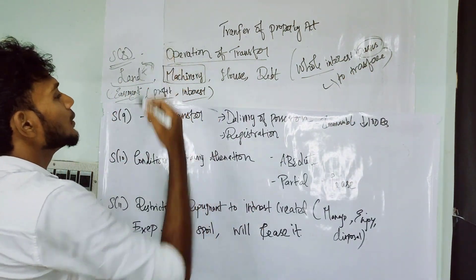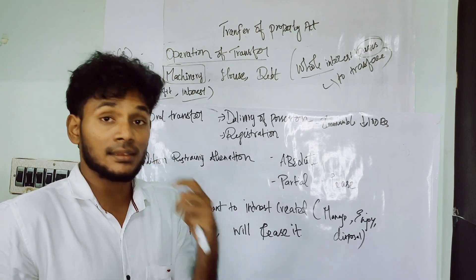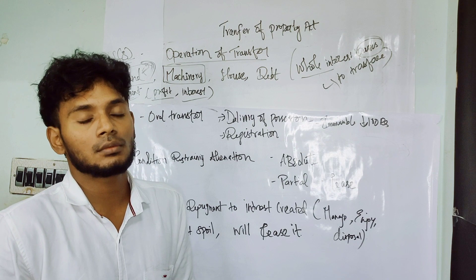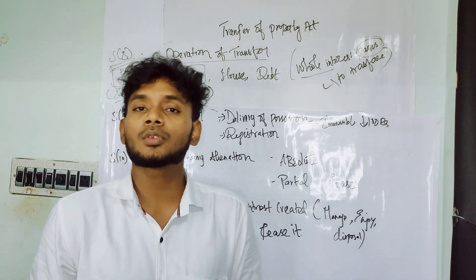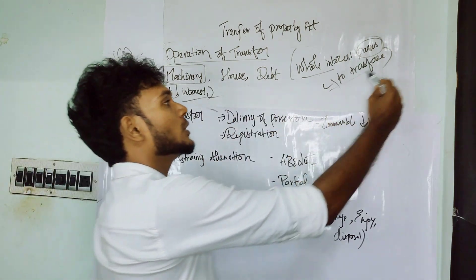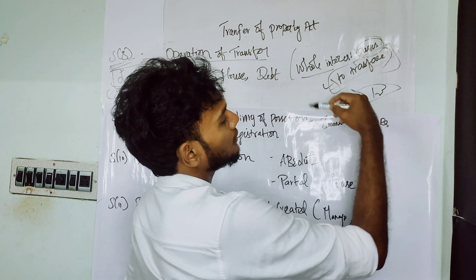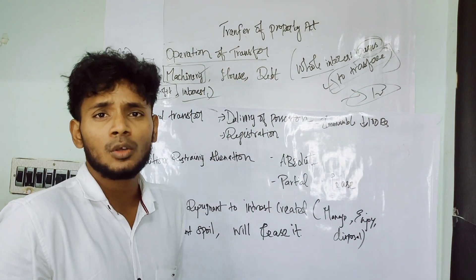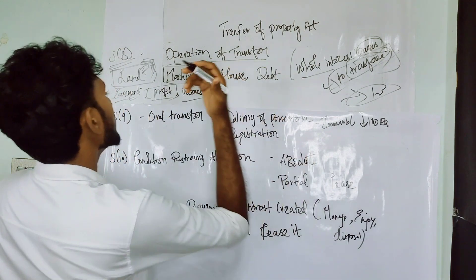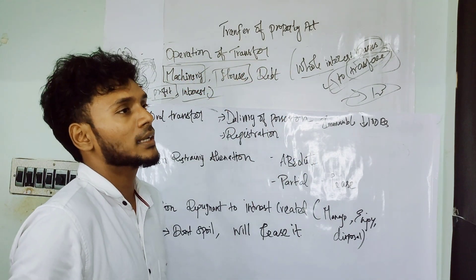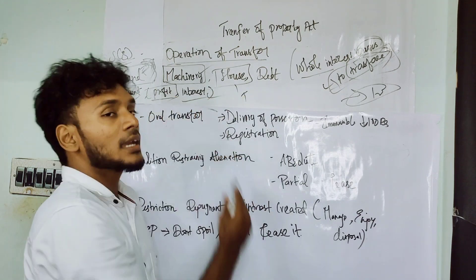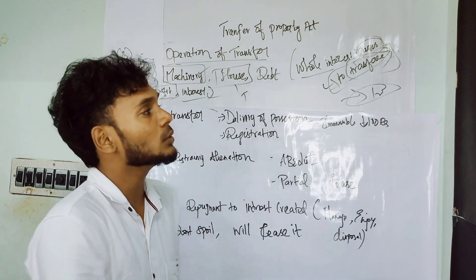For the landlord, the things which are attached to the land are also transferred. For example, suppose sugar cane - that sugar cane cultivated on the land, that profit and interest can be transferred to the transferee. Similarly, a house comes under immovable property, and the easement rights and rent profits can be transferred to the transferee.